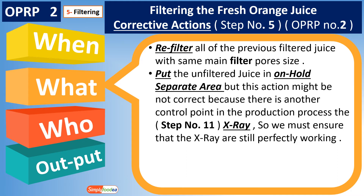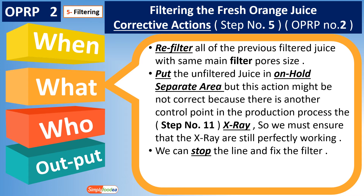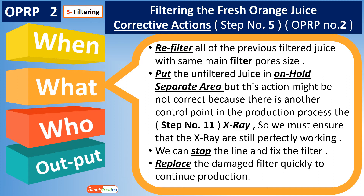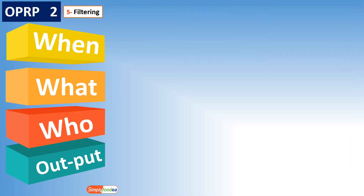Step number 11, which is CCP number 2 — the X-ray — must be ensured to be perfectly working. Also, we can stop the line and fix the filter, or replace the damaged filter quickly to continue production. Any corrective action taken must be documented in the HACCP plan.